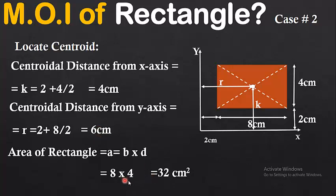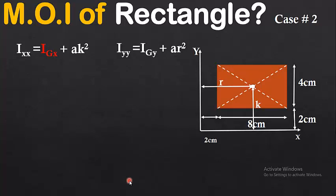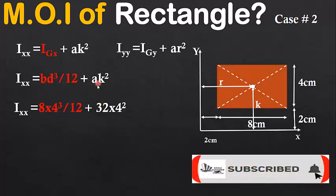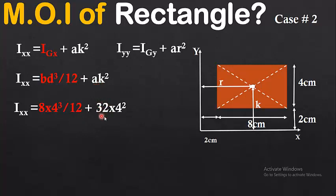Using the parallel axis theorem, Ixx = Igx + Ak² = bd³/12 + Ak². This formula determines the moment of inertia of two-dimensional figures. Substituting: Ixx = (8 × 4³)/12 + 32 × 4² = 554.67 cm⁴. Notice the difference between this result and case one, where the axes were adjacent to the figure.